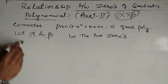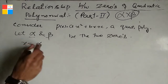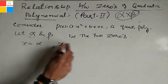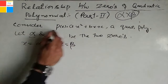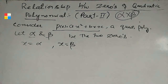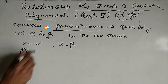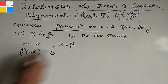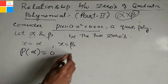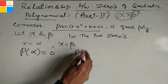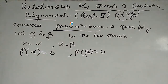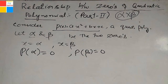So put x equal to alpha and x equal to beta in this expression. When we replace x as alpha, p(alpha) must be equal to zero, and p(beta) must be equal to zero. As discussed by the definition of zeros of a quadratic polynomial, p(alpha) must equal zero because the zeros of a polynomial make the polynomial equal to zero.